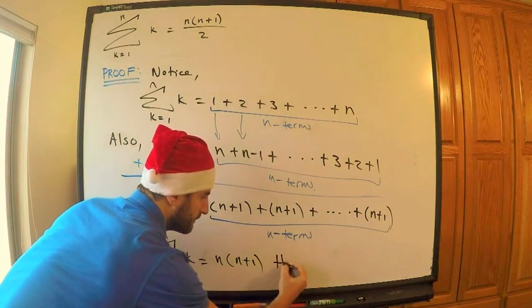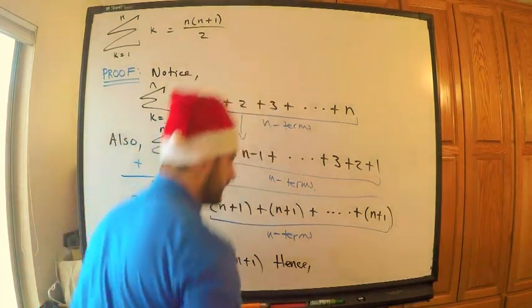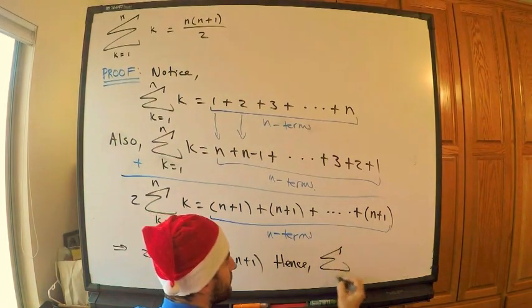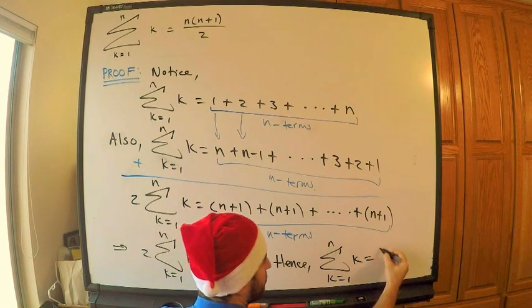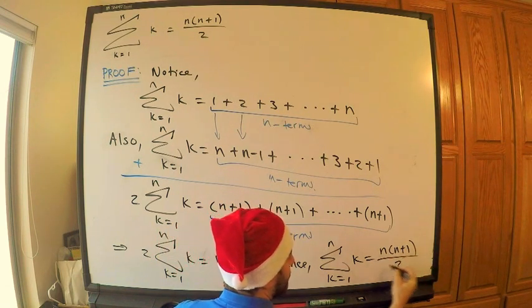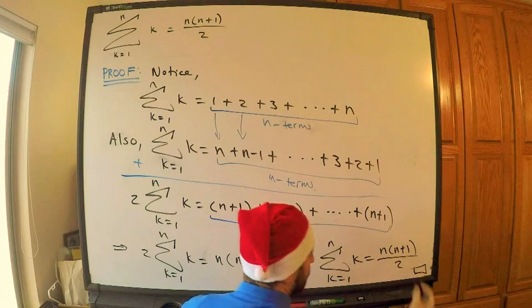Hence, we're done. Right? Hence, the sum from k equals 1 to n of k is equal to n times n plus 1 divided by 2. The proof is complete.